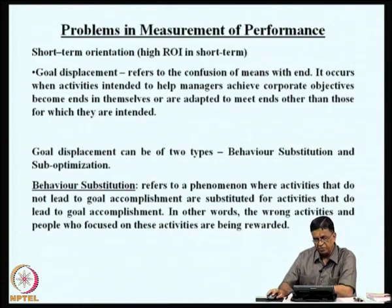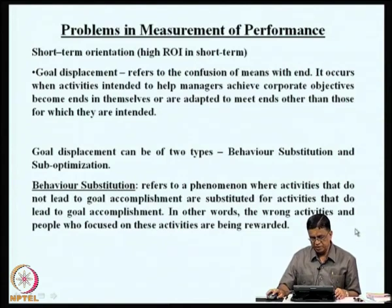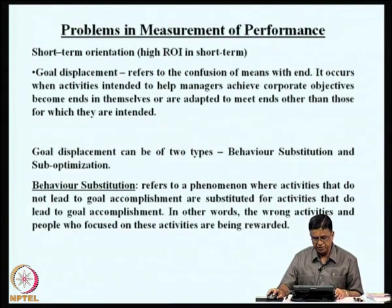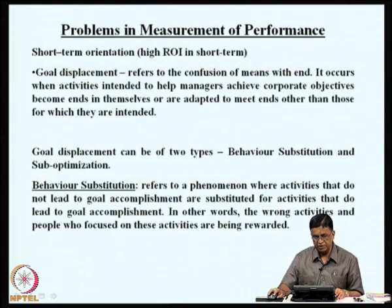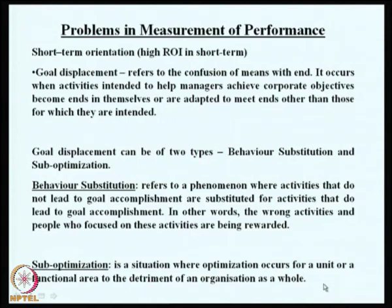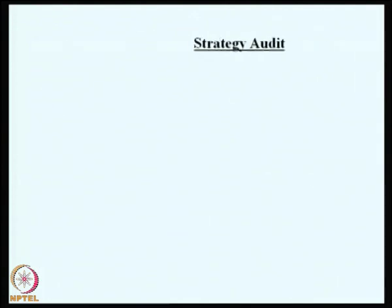We looked at the two types of goal displacement: behavior substitution and sub-optimization. Behavior substitution refers to a phenomenon where activities that do not lead to goal accomplishment are substituted for activities that do lead to goal accomplishment — in other words, the wrong activities are being rewarded. Sub-optimization is a situation where optimization occurs for a unit or functional area to the detriment of the organization as a whole.